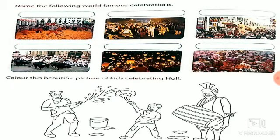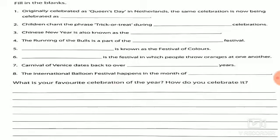The next activity is: color this beautiful picture of kids celebrating Holi. Just give the color to this picture. On the next page, fill in the blanks — read the question and give the correct answer for the fill-in-the-blanks section.